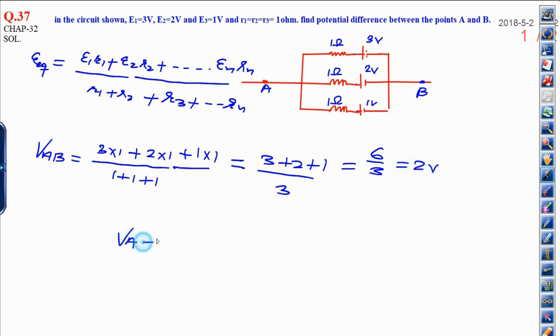Now, potential difference between A and B can be written as 2 volt. This is the effective technique in short period.